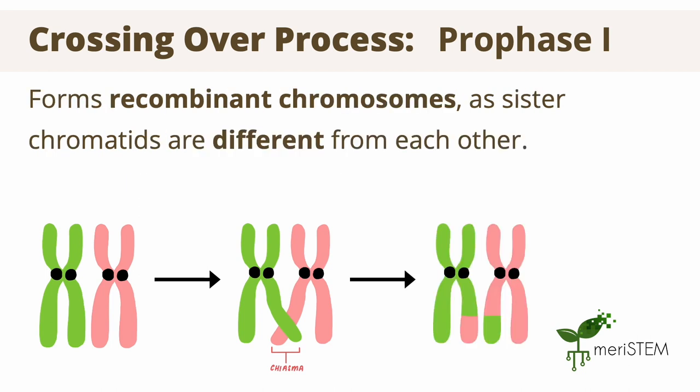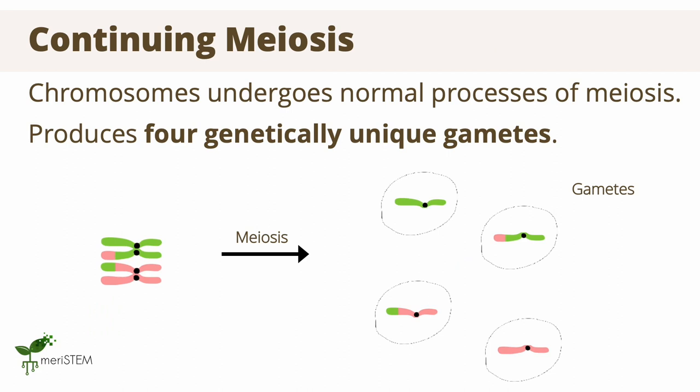This produces recombinant chromosomes, where the sister chromatids are no longer identical to each other due to the gene exchange during crossing over. These recombinant homologous chromosomes then line up at the equator or the middle of the cell and segregate during metaphase 1, undergoing the normal processes of meiosis.